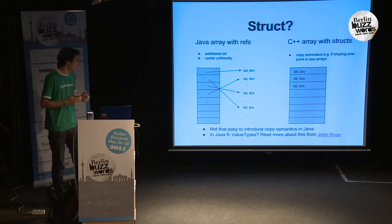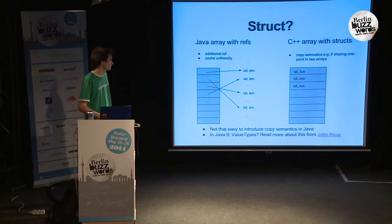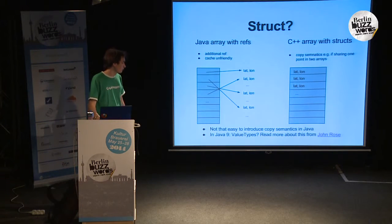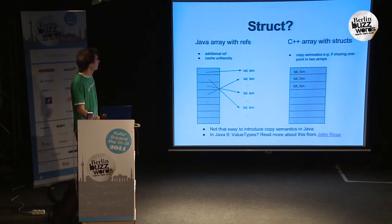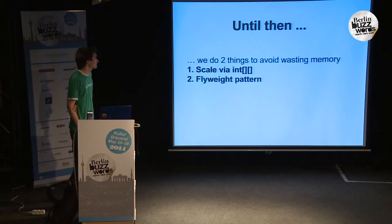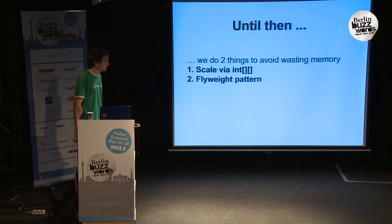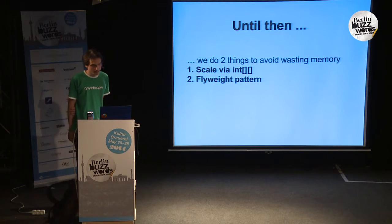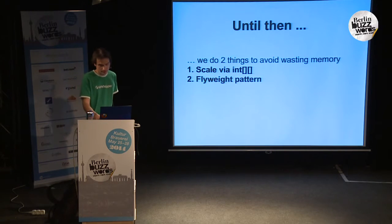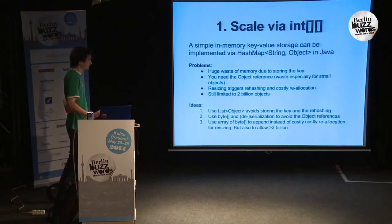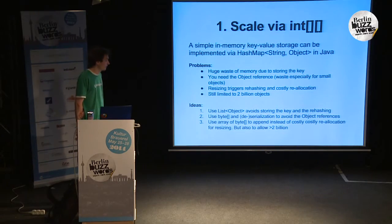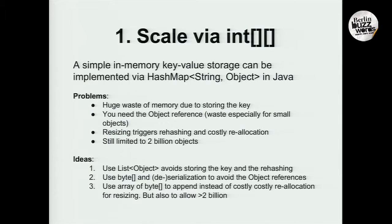In Java 9 we will hopefully see so-called value types — you can read more about this from John Rose's blog post from about a month ago. Until then, in GraphHopper we do two things to avoid wasting memory: first, we scale with arrays of byte or integer arrays; and second, to make all of this easy to use for the developer, we use the flyweight pattern.